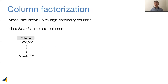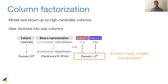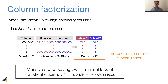NeuroCard solves this challenge by factorizing these columns into several sub-columns. We look at the binary representations of these distinct values and chunk off every n bits. For example, the purple bits turn into sub-column 1, and the blue bits turn into sub-column 2. The benefit is that now we only need to embed much smaller vocabularies or domains. This optimization gives significant space savings with minimum loss of statistical efficiency — in this example, we reduce 128 megabytes down to 250 kilobytes, a saving larger than 500x.